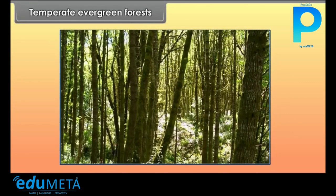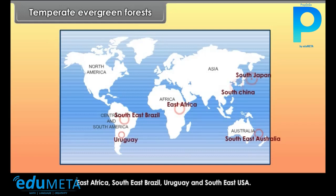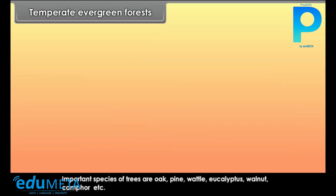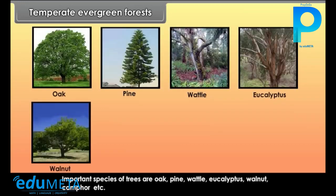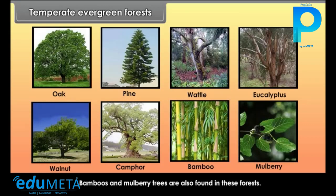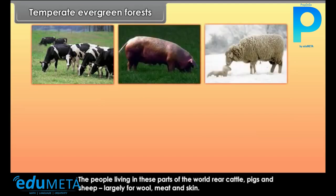Temperate Evergreen Forests are found in the warm temperate areas of South China, South Japan, Southeast Australia, East Africa, Southeast Brazil, Uruguay and Southeast USA. These forests have a mixed variety of trees that are thick and profuse. Important species include oak, pine, wattle, eucalyptus, walnut, camphor, bamboo and mulberry trees. The people in these regions rear cattle, pigs and sheep largely for wool, meat and skin.